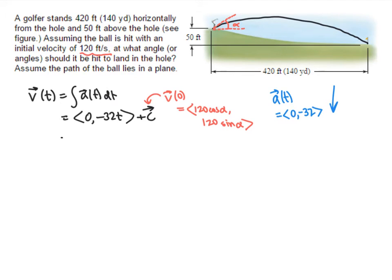So when we add that to our velocity vector, we get 120 cosine alpha in the x component, and negative 32t plus 120 sine alpha in the y component.